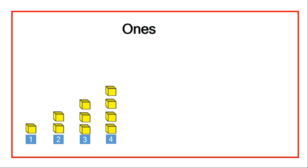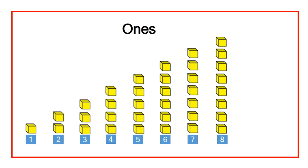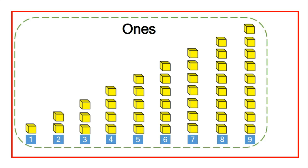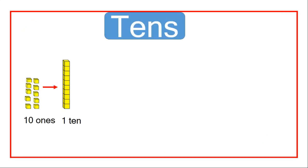Four ones, five ones, six ones, seven ones, eight ones, nine ones. Now, all these belong to a place which we call ones. If I get ten blocks of ones, then I will have one ten. Ten ones make one ten.